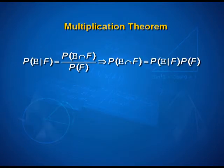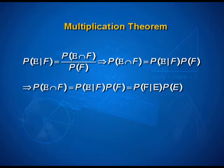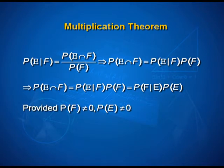From the conditional probability formula, we get that the probability of E and F equals the probability of E given that F has occurred, multiplied by the probability of F. This can also be rewritten as the probability of F given that E has occurred, multiplied by the probability of E. This is exactly what is referred to as the multiplication theorem, with the conditions that probability of F and probability of E are both non-zero.